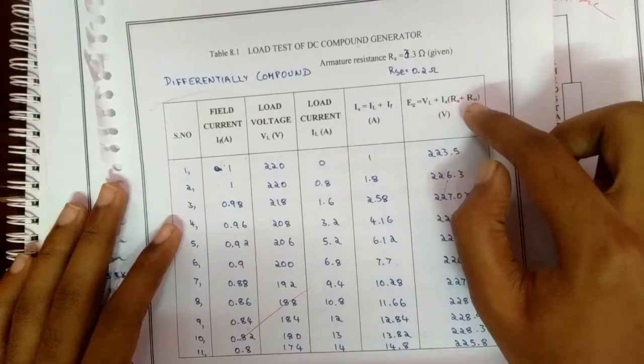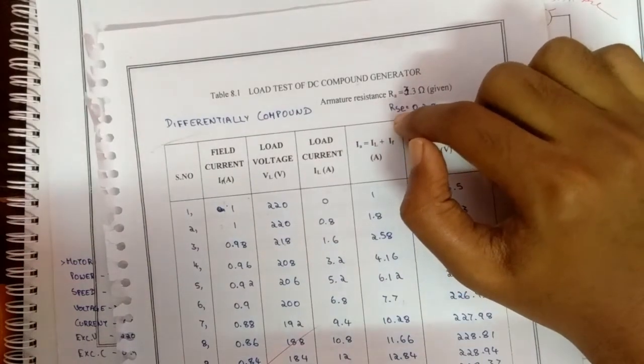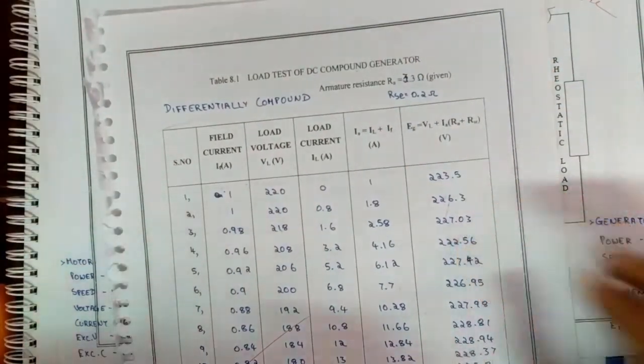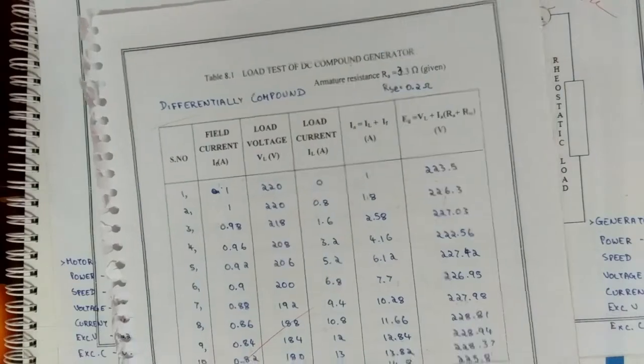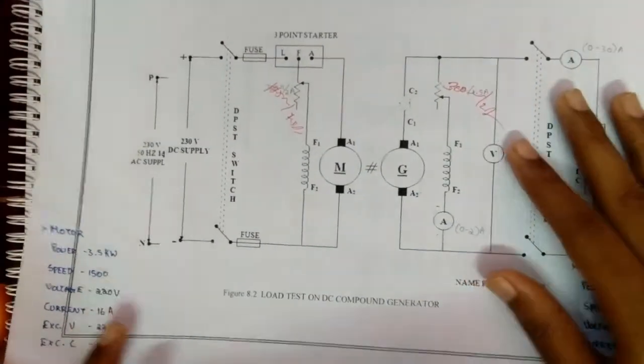RA and RSC we will find using the multimeter. We have completed the differential compound test.